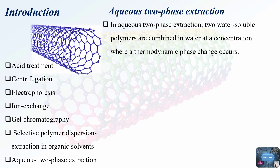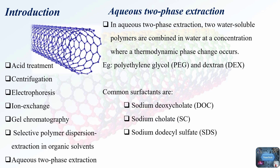Surfactants like sodium deoxycholate (DOC) or sodium cholate (SC) are often compared to another one called sodium dodecyl sulfate (SDS). This happens in a system with polyethylene glycol (PEG) and dextran (DEX), aiming to control how the SWCNTs are distributed between the phases.